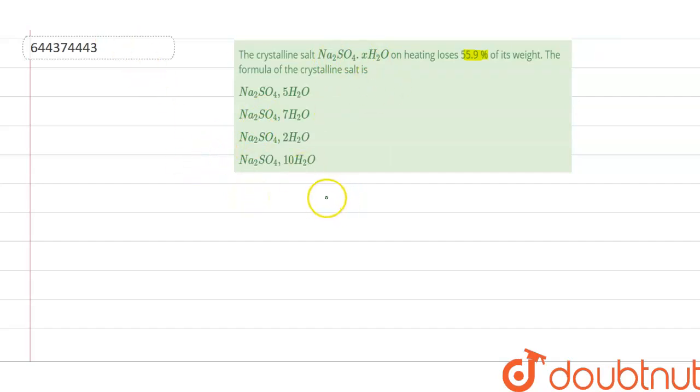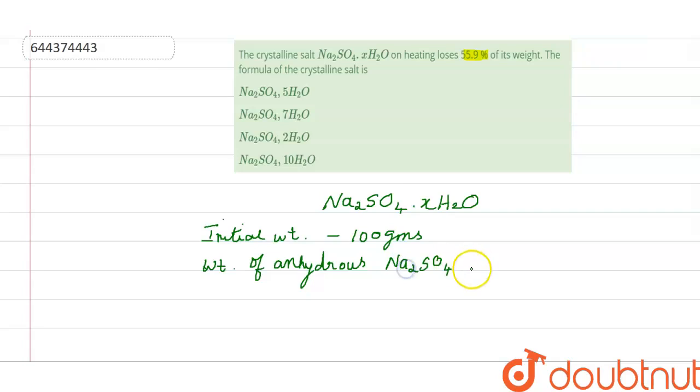Now what they have given is Na2SO4·XH2O. We have to see what is the value of this X. Let us assume the initial weight to be 100 grams. If the initial weight is 100 grams, then the weight of anhydrous sodium sulfate will be, anhydrous is which does not have water, 100 minus 55.9, which equals 44.1 grams.